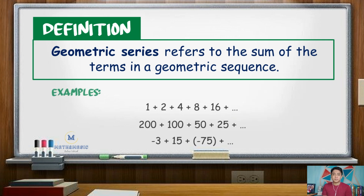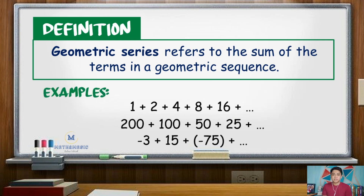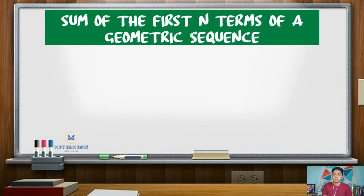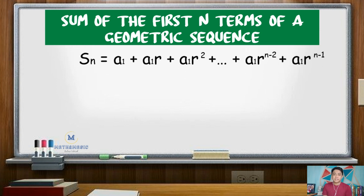As an illustration, we may have 1 plus 2 plus 4 plus 8 plus and so on and so forth. Deriving the formula for the sum of the first n terms of a geometric sequence, s of n is equal to a sub 1 plus a sub 1 times r plus a sub 1 r squared plus and so on plus a sub 1 r raised to n minus 2 plus a sub 1 times r raised to n minus 1.